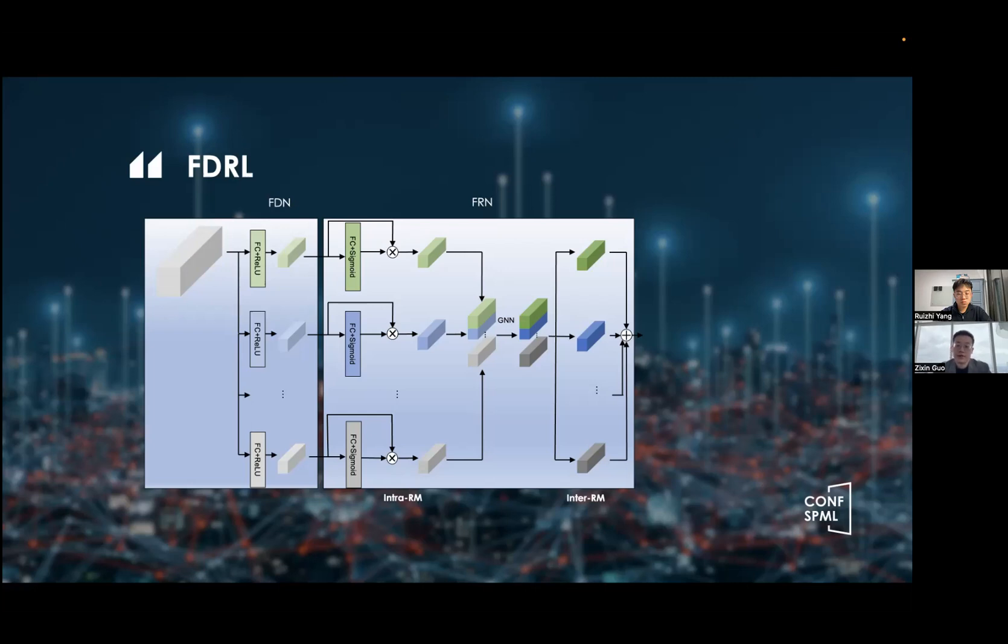So there are two modules in the FRN, intra-RN and inter-RN. So the intra-RN models relation of the same latent feature across all input examples, which learns the weight for each latent feature that determines its contribution of the expression prediction. The intra-RN learns the relation of different latent features in the same input example by a graphical neural network. In such way, after passing through both intra-relation and inter-relation networks, the features are aggregated and fed into the facial expression prediction module, which only consists of a multi-layer perception predicting the probability of the expression classification.